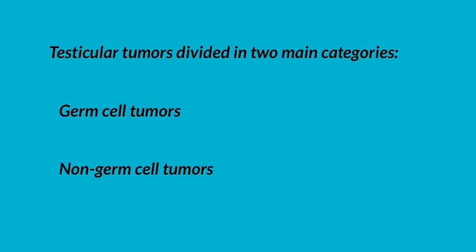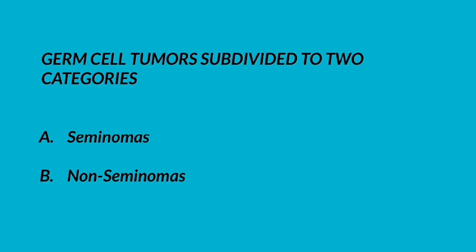Testicular tumors are divided into germ cell tumors and non-germ cell tumors. Germ cell tumors are subdivided into two categories: seminomas and non-seminomas.